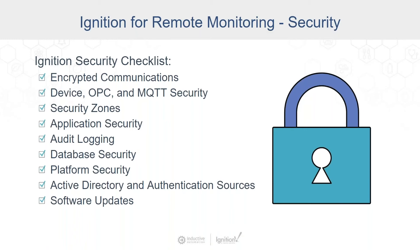Platform security for the actual operating system should be thought through: Active Directory, authentication sources, identity providers. Then have a plan for software updates — is there a patch cycle, how much downtime will that cause, and does it make sense to use Ignition's redundancy so that if you take down the main server, the backup takes over while patches are applied? This is important enough that we wrote a 14-page document detailing these best practices — the Ignition Security Hardening Guide — available in the handouts area or on our website's resources section.